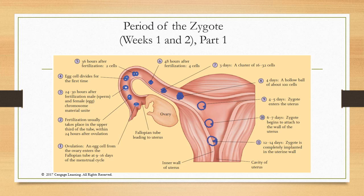Step one is ovulation — an egg cell is released from the ovary and enters the fallopian tube, occurring between days 9 to 16 of the menstrual cycle. Step two is fertilization, which usually takes place in the upper third of the fallopian tube within 24 hours of ovulation. Step three: between 24 to 30 hours after fertilization, the male sperm and female egg chromosomes unite.